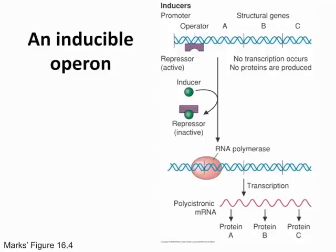Earlier we talked about the repressor being an on/off switch — if the repressor is bound to your DNA, there is no transcription occurring. To activate the operon, an inducer (the green molecule) will bind to your repressor and inactivate it. Once the repressor is off, RNA polymerase can bind to the promoter region and start transcription. Transcription then follows, translation comes, and proteins are made. So: repressor on means no transcription; inducer makes the repressor inactive, thereby stimulating transcription.